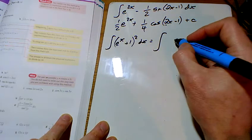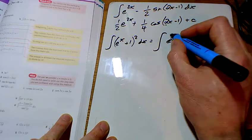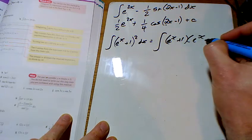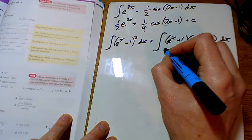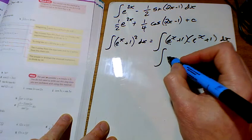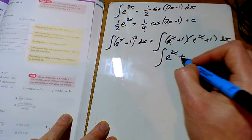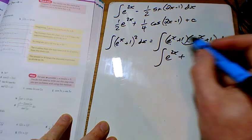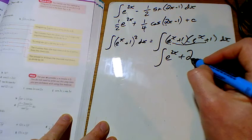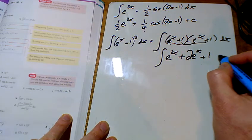So I'm going to get e to the x add 1 times by e to the x add 1. And working that out, e to the x times e to the x is e to the 2x. Then I've got 1 e to the x and another e to the x. So that's 2 e to the x's and plus 1.